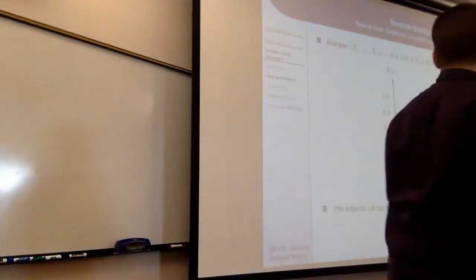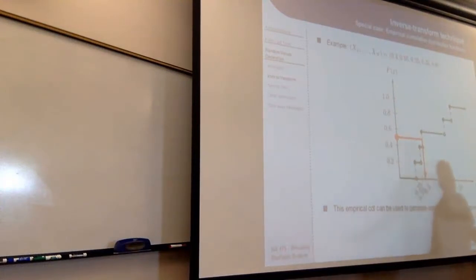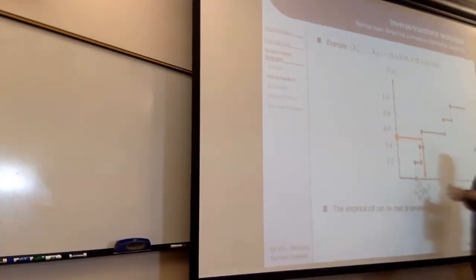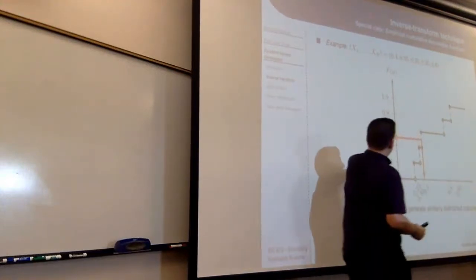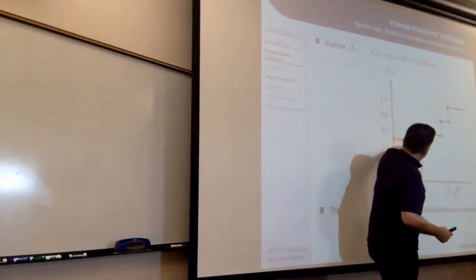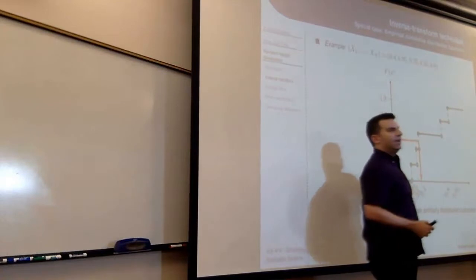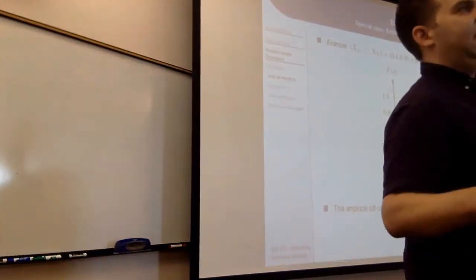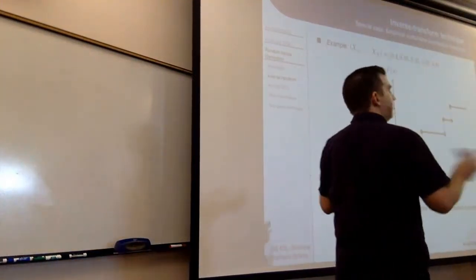Now that I've generated this sample CDF, if I draw a random number from 0 to 1, I do the same mapping. Anything between 0.4 and 0.6 maps to 0.4, anything between 0.2 and 0.4 maps to 0.35, and anything between 0 and 0.2 maps to 0.25. This gives me a way of generating simulated data that matches the proportions in my real sample set, without even fitting a curve.